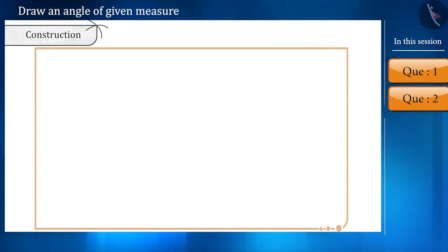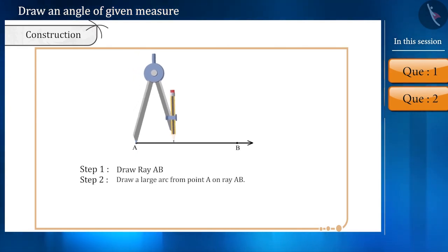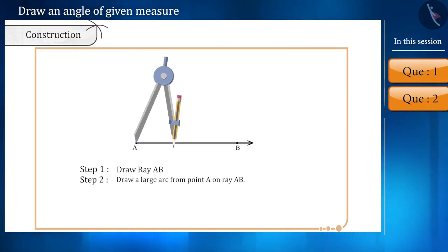Now, we will see these steps in brief. Draw a ray AB. With the help of a compass taking a radius, draw a large arc from the vertex A in such a way that it intersects the ray AB.